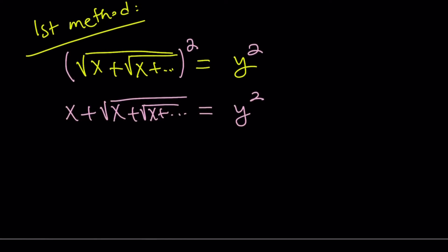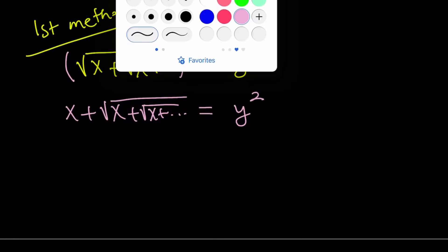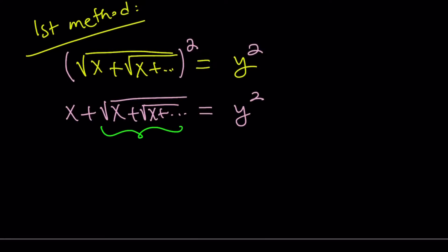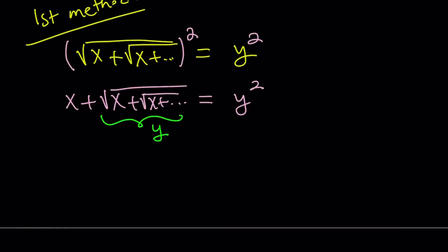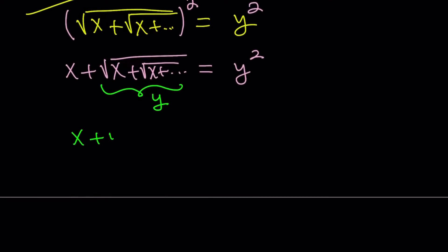And the right hand side is going to give us y squared. Now notice that these infinite radicals are nested radicals, and they contain themselves. So, the expression that I come across here, this is the same thing as y. So we get the following, x plus y equals y squared.